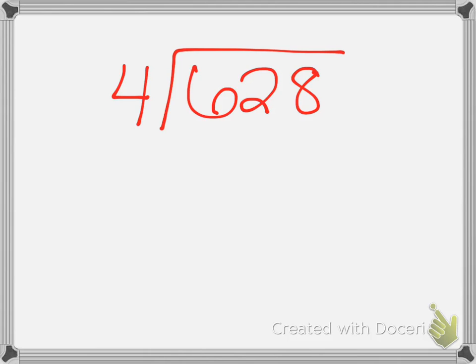Our next example is going to be 628 divided by 4, and this time 4 does go into 6 one time. And I'm going to multiply 1 times 4, and that gives me 4, and I subtract it out. And so I'll have two hundreds left, and then I'm going to bring down my two tens.